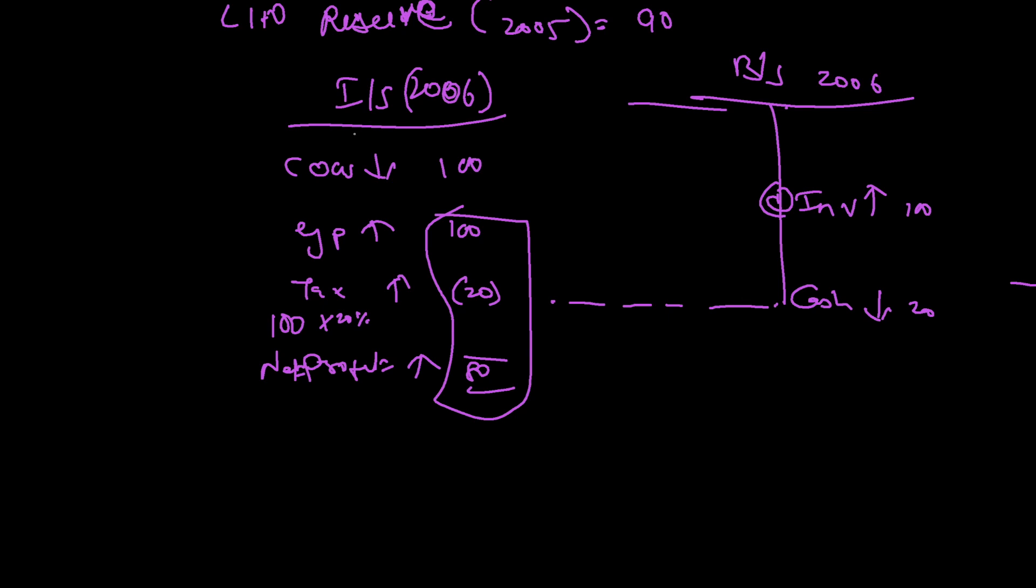Because you are paying tax, your cash will also come down by 20. Let me put numbers to this. This is the first step, second step, third, fourth. After tax, fifth step, sixth, seventh. Your profit is going up by 80, so retained earnings go up by 80.